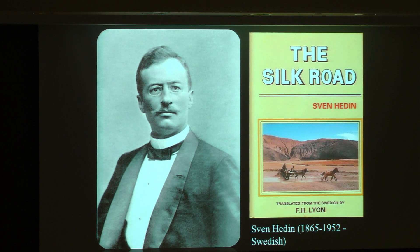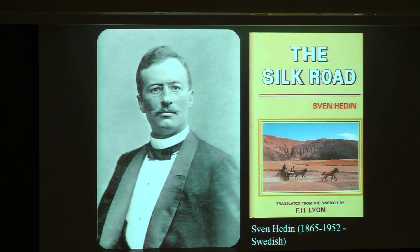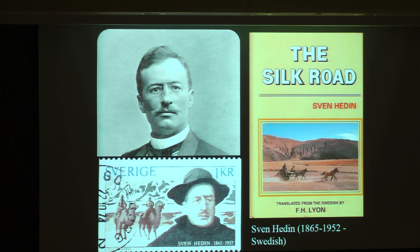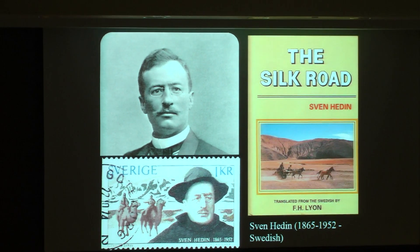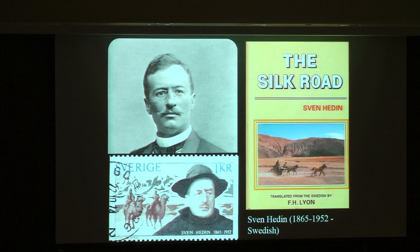Hedin went to Russian Turkestan, under control of the Tsarist regime, and also to Chinese Turkestan — modern-day Xinjiang — mapping more than 6,500 miles of territory. He didn't get a plant or animal species named after him, but Sweden honored him by putting him on a one-kroner stamp, recognizing the importance of these European explorers.